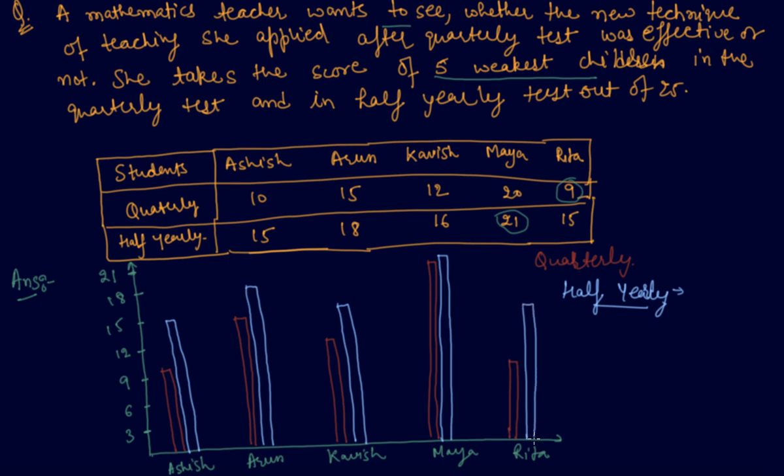So students, in this manner, you can draw a bar graph of any number of observations. And you have to choose the scale very wisely, students, so that you should not make any mistake while drawing a bar graph.